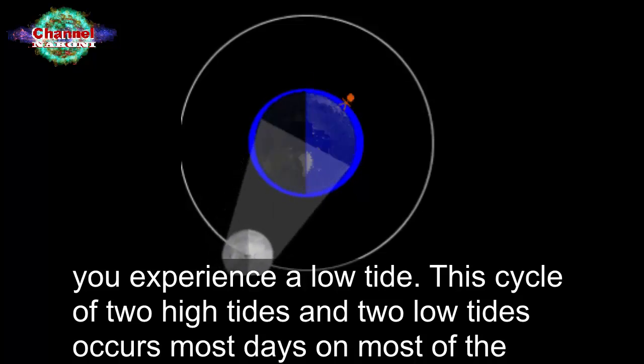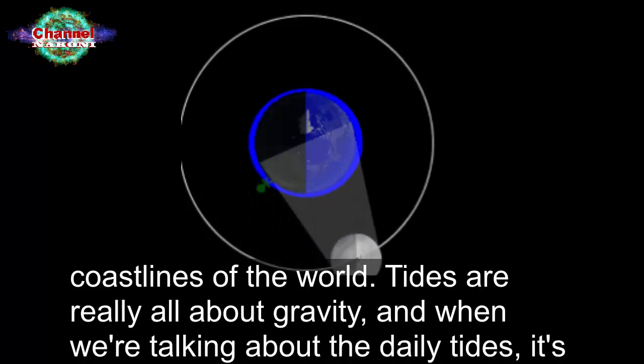This cycle of two high tides and two low tides occurs most days on most of the coastlines of the world.